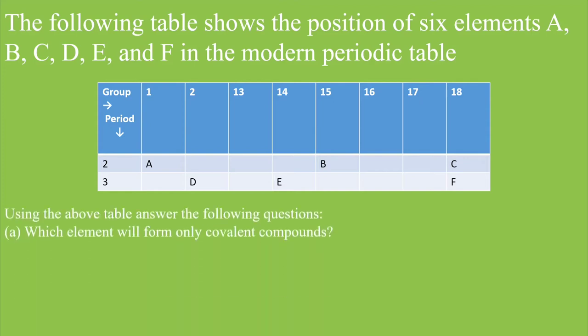Which element will form only covalent compounds? If we study the periodic table, then we can easily identify that in the periodic table, only group 14 forms covalent compounds. So, which element is present in the 14th group? That is element E. So, the answer to this question is E.